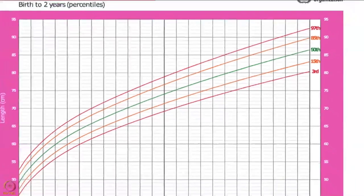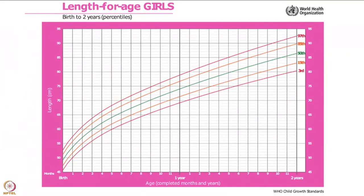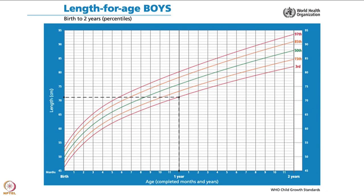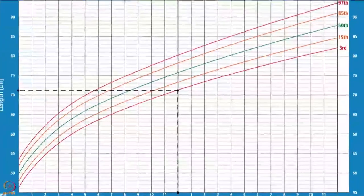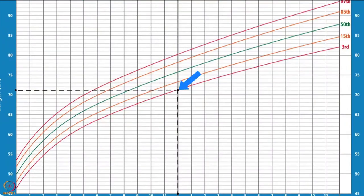These percentiles indicate the rank of the child's measurement. In this graph, Madhav's length is plotted on the 3rd percentile line, meaning 97% of children of his age are taller than him.